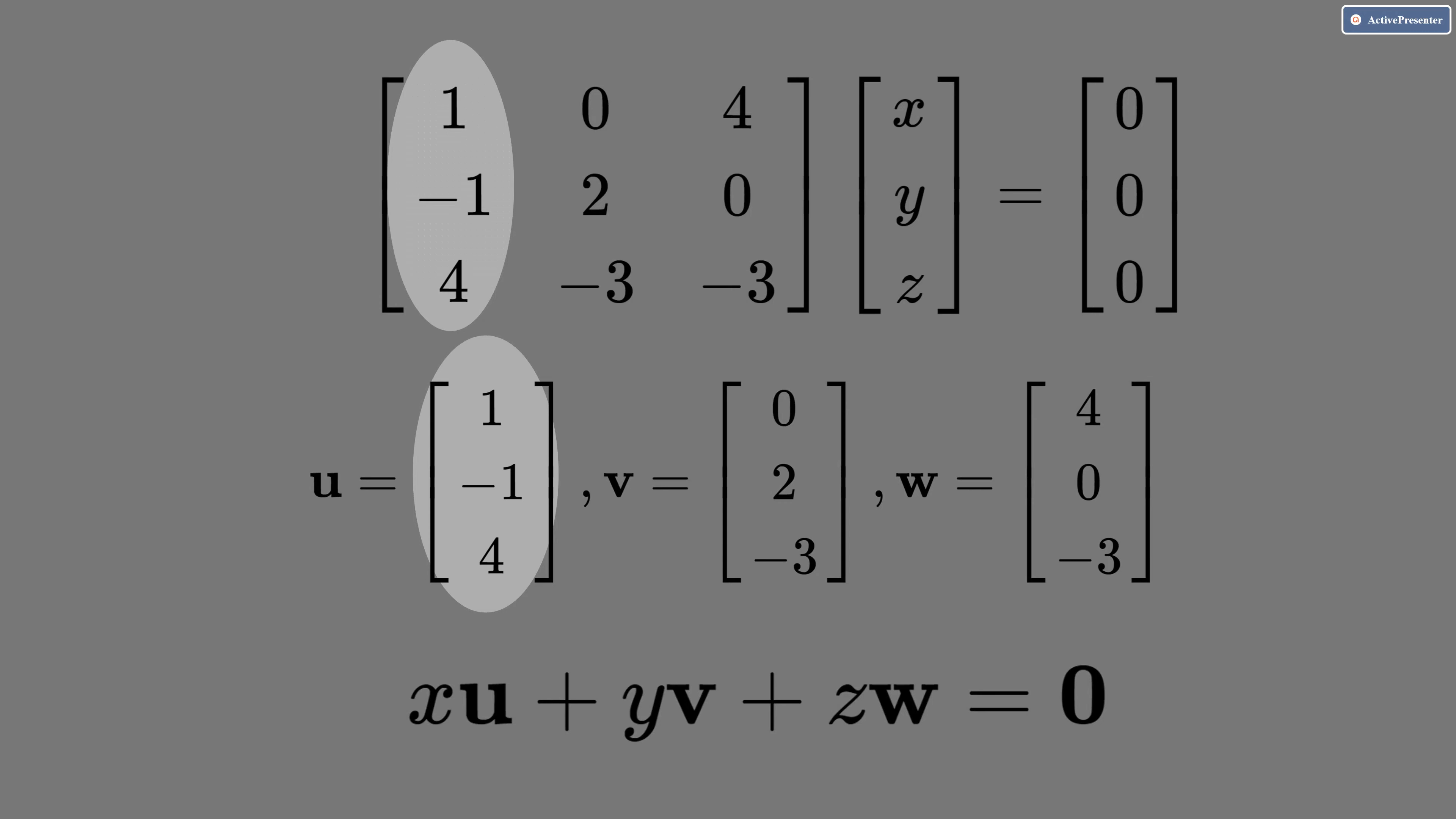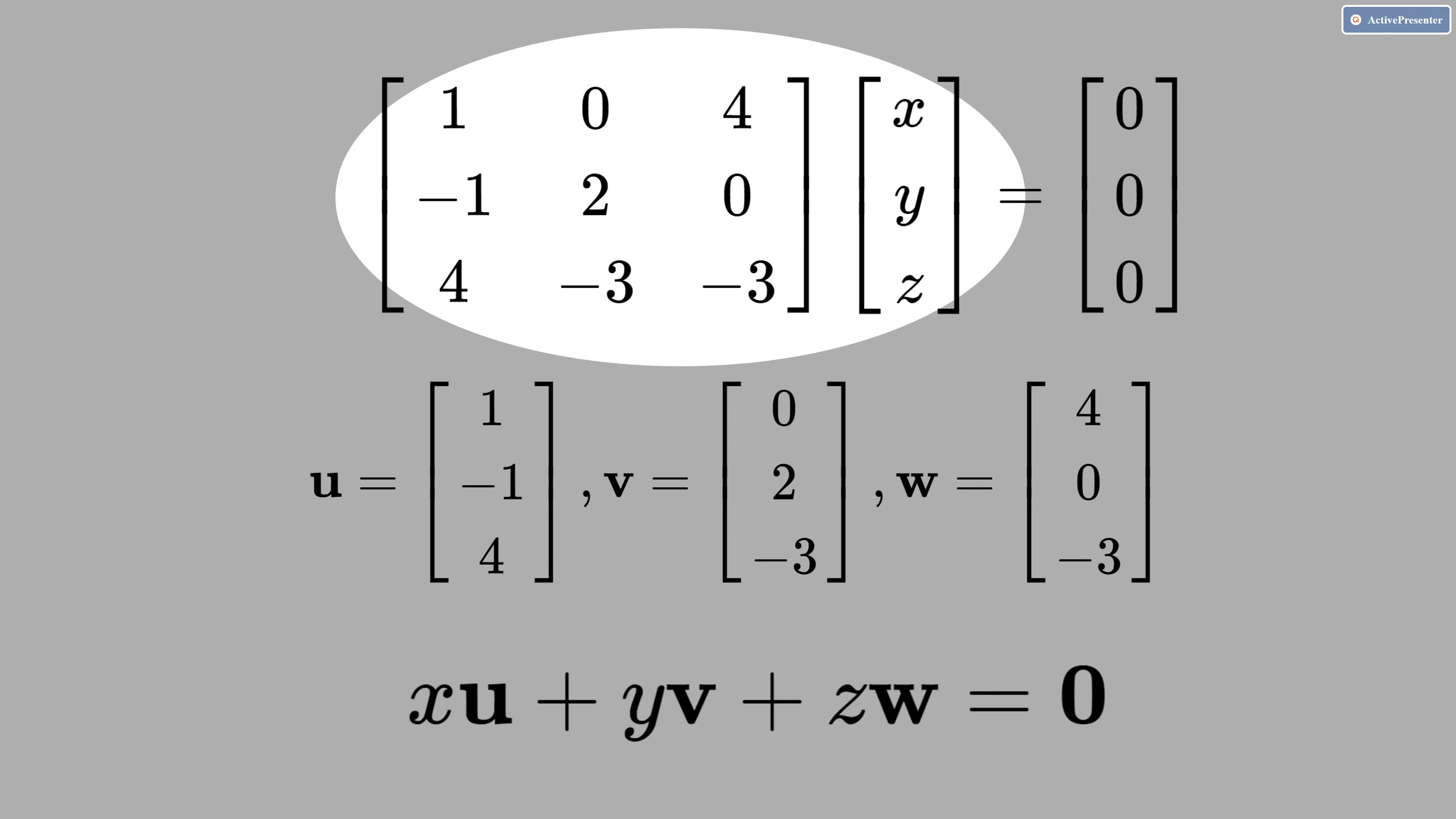See that this is the vector u, this is the vector v and this is the vector w. Remember that for matrix multiplication, you take this first row and multiply by this column. You take the second row and multiply this column. And you take the third row and multiply by this column.